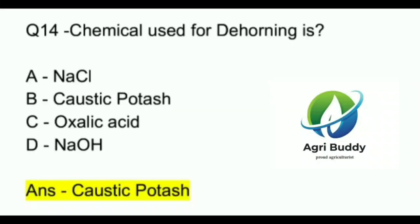Question 14. Chemical used for dehorning is? A. NACS. B. Caustic potash. C. Oxalic acid. D. NaOH. And the answer is Caustic potash.